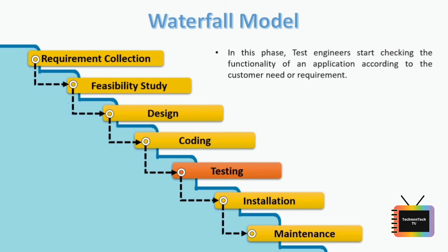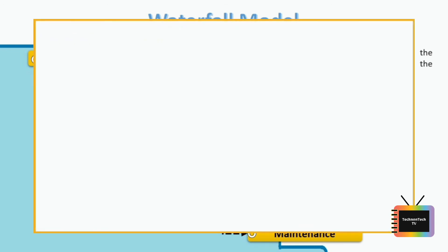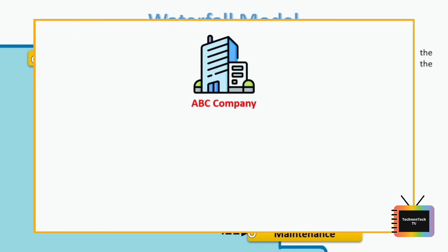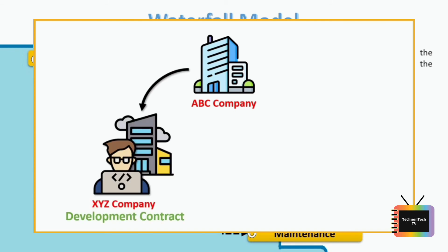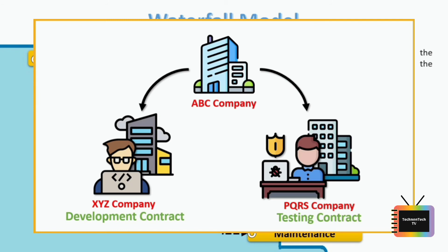The biggest drawback of the waterfall model is that once a phase is complete, you cannot move back to the previous stage. Because of this, there is a high chance of risk — if defects are found during testing or maintenance, the cost will increase. For example, company ABC gives its development contract to company XYZ and its testing contract to company PQRS.